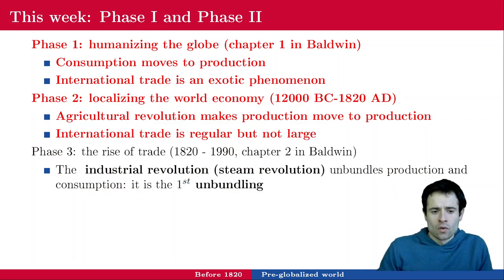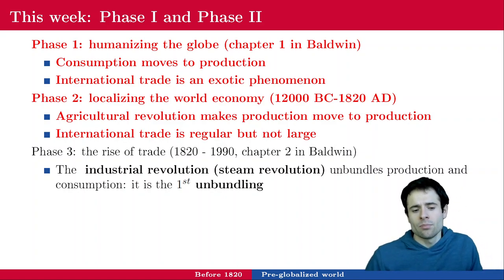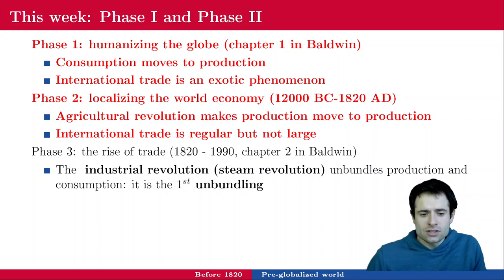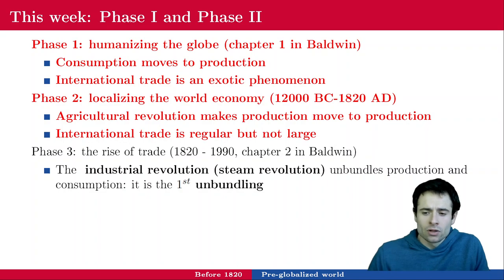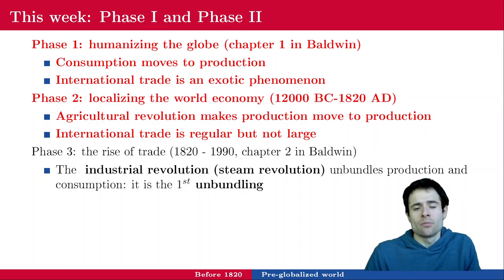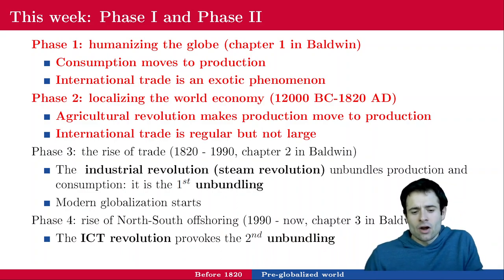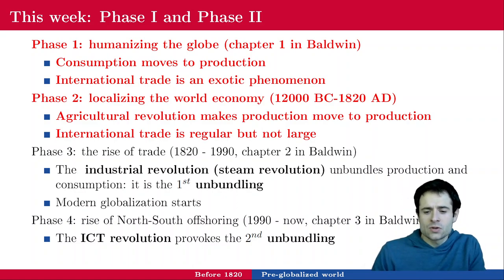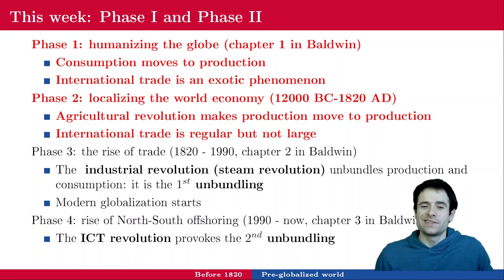Next week we are going to go over phase three — the rise of trade between 1820 and 1990 — where things start to pick up pretty fast. That's going to be chapter two in Baldwin's book. This phase started with the industrial revolution, the steel revolution, that allows us to unbundle production and consumption — what we call the first unbundling. In phase four, after 1990, there will be a new phase triggered by the ICT revolution — information and communication technology — the second unbundling. But in order to get there, we first need to understand phases one, two, and three.